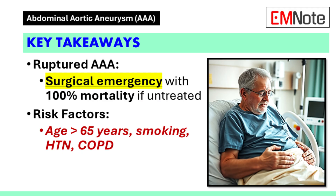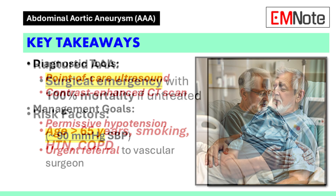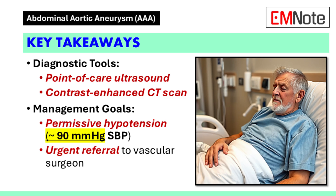Key takeaways. A ruptured abdominal aortic aneurysm is a surgical emergency requiring immediate intervention. Risk factors include age greater than 65 years, smoking, hypertension, chronic obstructive pulmonary disease, and peripheral vascular disease. Diagnostic tools like point-of-care ultrasound and contrast-enhanced CT scan are essential. Permissive hypotension aims for a systolic blood pressure of approximately 90 millimeters of mercury to minimize bleeding. Early referral to a vascular surgeon is critical for optimal outcomes. By adhering to these principles, healthcare providers can improve survival rates and outcomes for patients with suspected or confirmed abdominal aortic aneurysms.